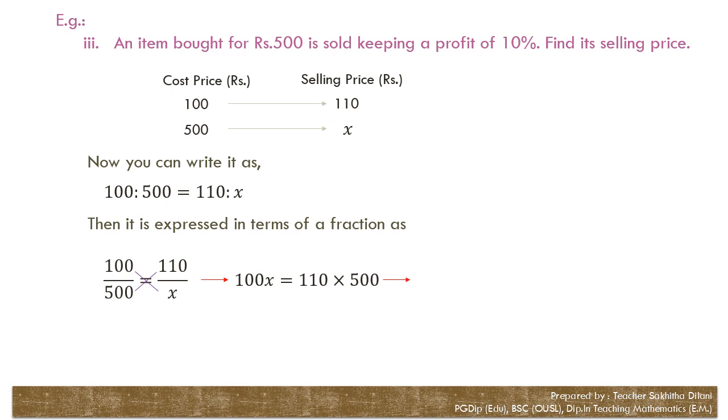To find the value of X, divide both sides by 100. Then on the left hand side, 100s get canceled and X is left. On the right hand side, 500 and 100 both can be divided by 100. 100 divided by 100 is 1, 500 divided by 100 is 5. Then 110 into 5, that is 550. Hence, the selling price of the item is 550 rupees.